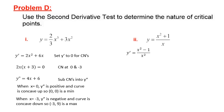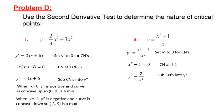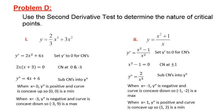For another function, we find the first derivative, set it equal to zero, and focus on the numerator: x²-1=0 gives critical numbers at x=+1 and x=-1. We substitute these into the second derivative: plugging in x=-1 gives a negative second derivative — the curve is concave down, so (-1, -2) is a local maximum. Plugging in x=+1 gives a positive second derivative — the curve is concave up, so (1, 2) is a local minimum.